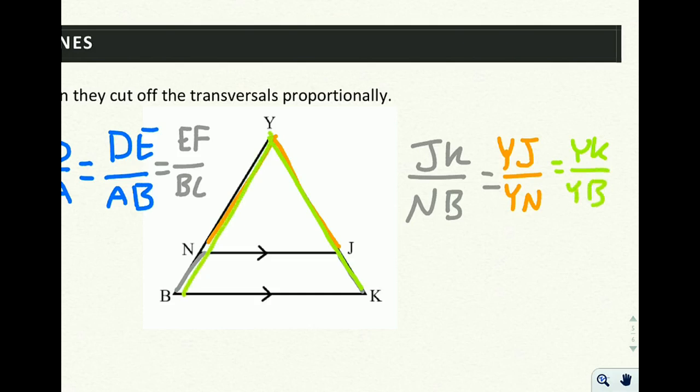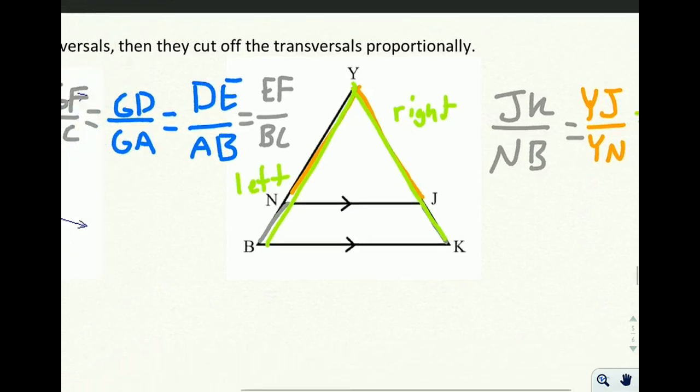So exact same concept as before. You take a segment, and I decided to do the right over the left. So I decided to always take the right piece over the left piece. I could have written them all as left over right, as long as I'm consistent with all of my fractions, then it's okay. It's when you start mixing and matching, some left over right, some right over left, that's when you get into trouble, that's when it stops being true.